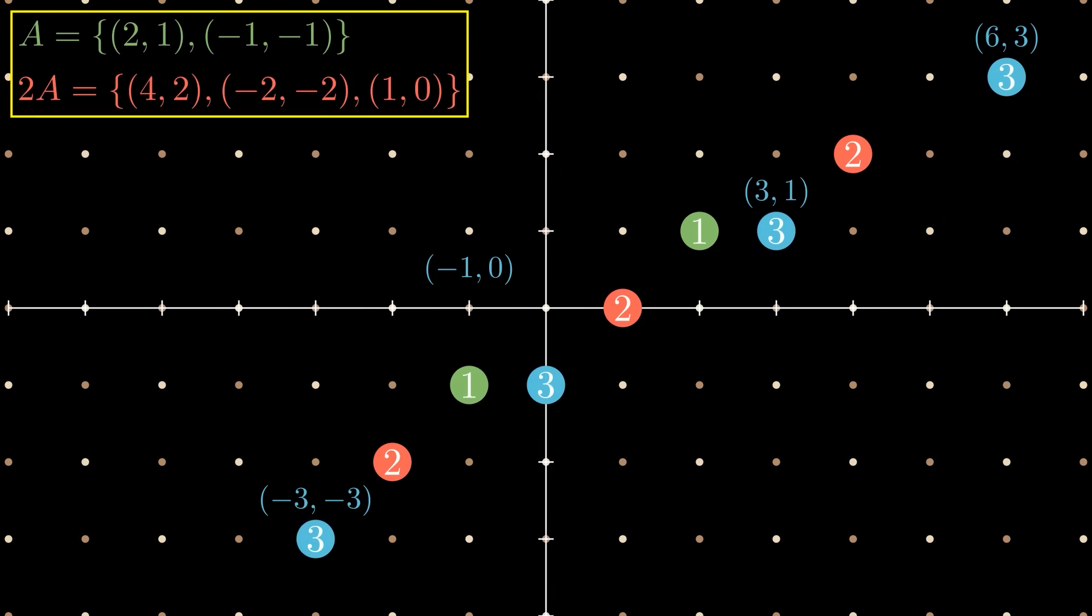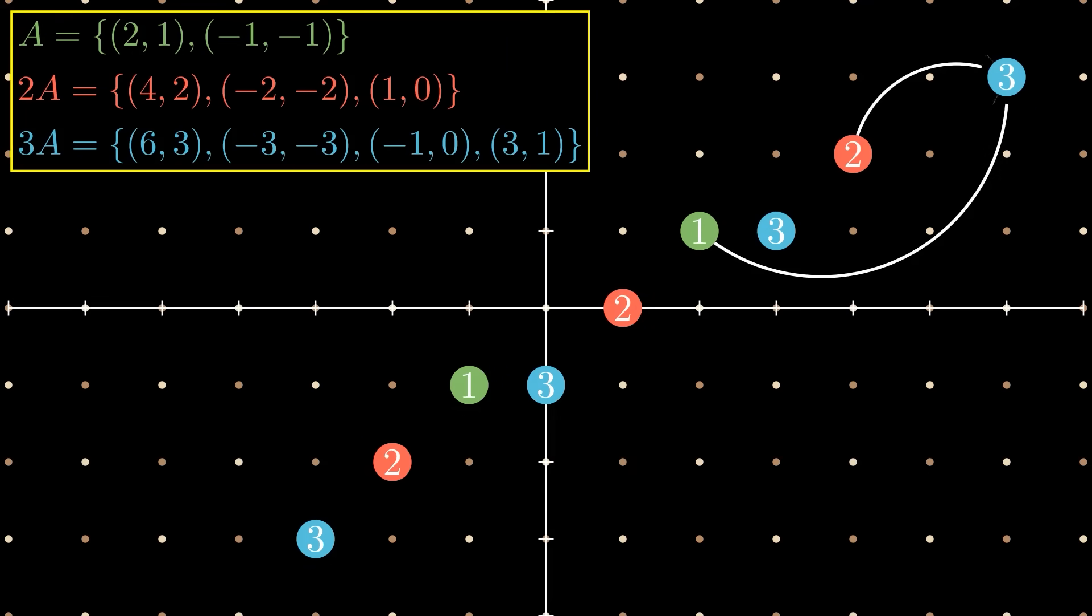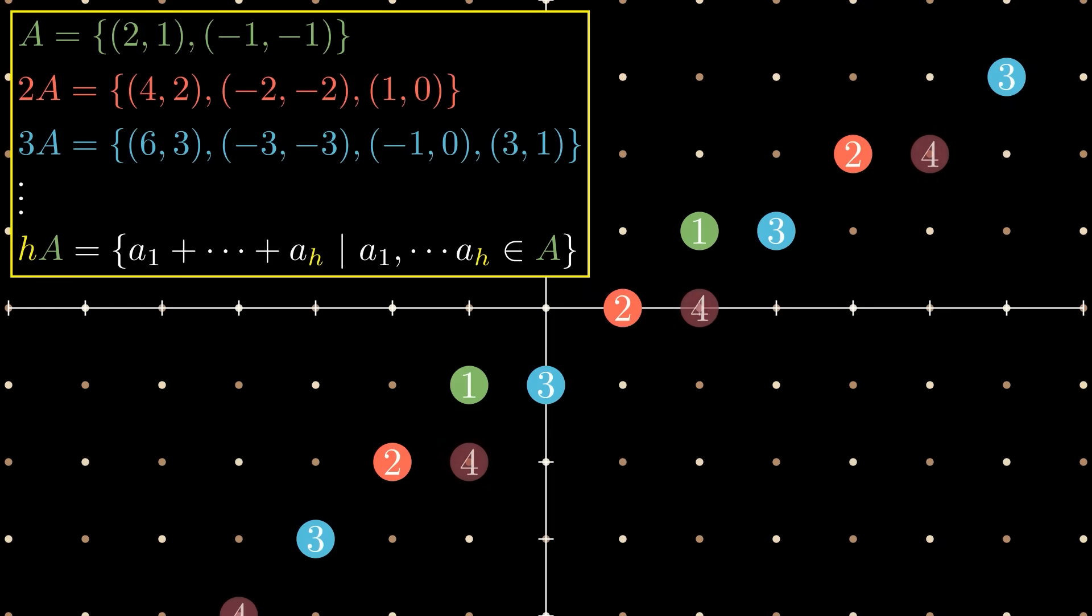Let's keep going. 3A is then all ways that I can take three elements from A and add them together. Or another way of saying this is that 3A adds together an element from 2A and an element from A. And then in general I will have what I will call HA. This is the sum of H different elements from A. This is called a sum set and it is going to be the real object of study for the mathematics in this video. The linear algebra students among you might see a vague familiarity with the idea of the span of a set of vectors. But while the span is all linear combinations, a sum set only specifically allows the sum of elements of A with coefficient 1 in front.